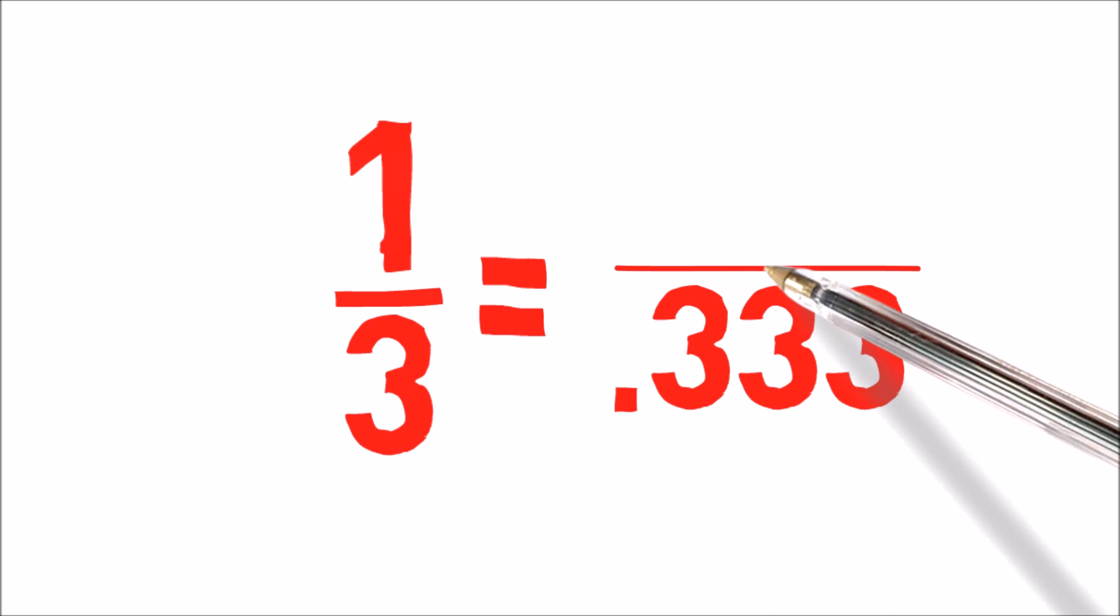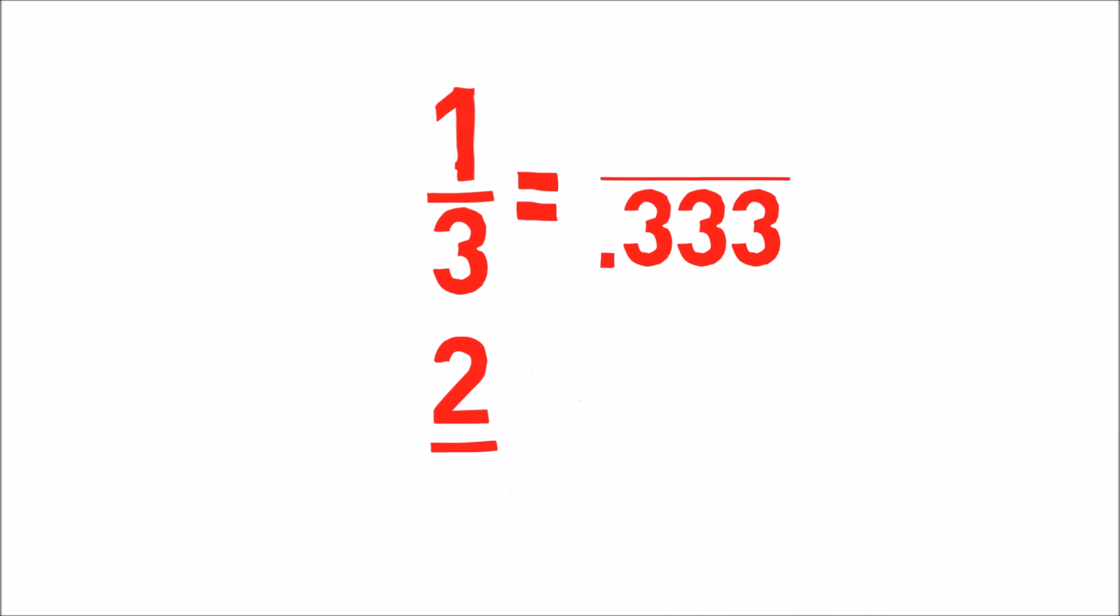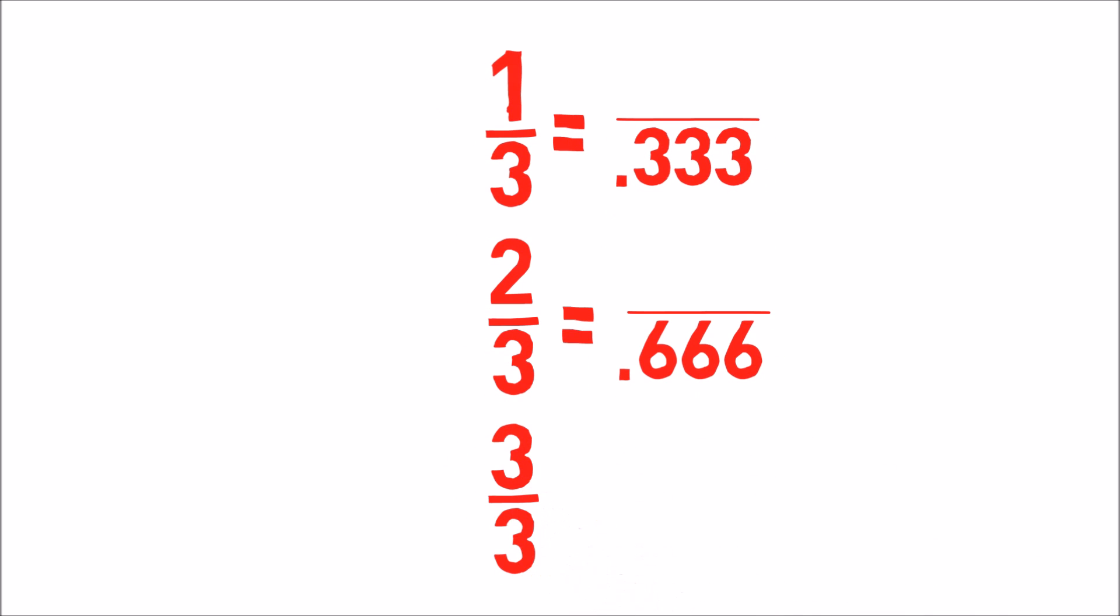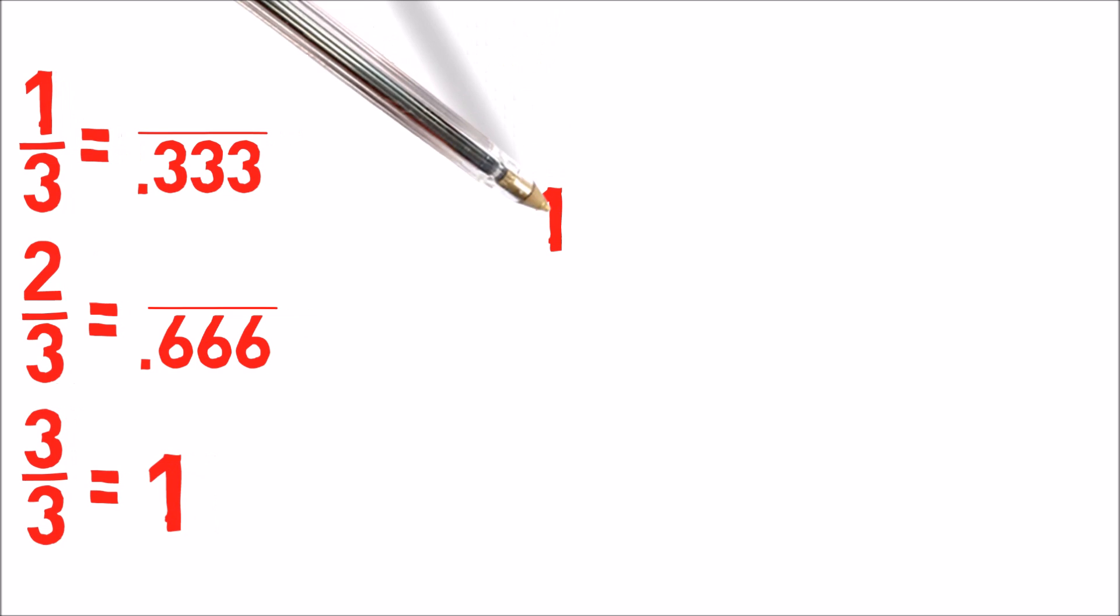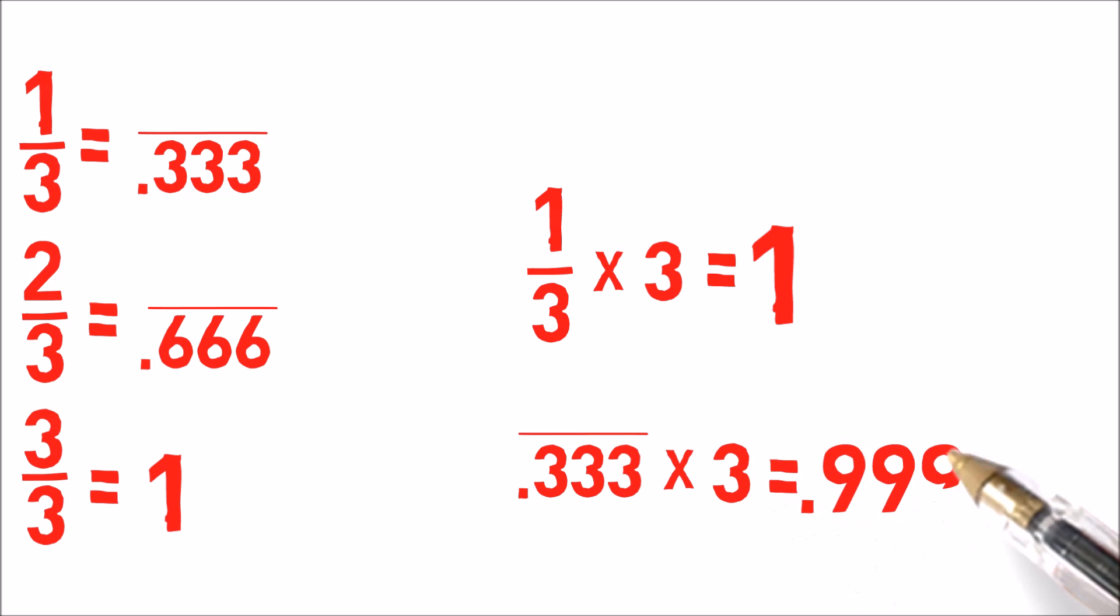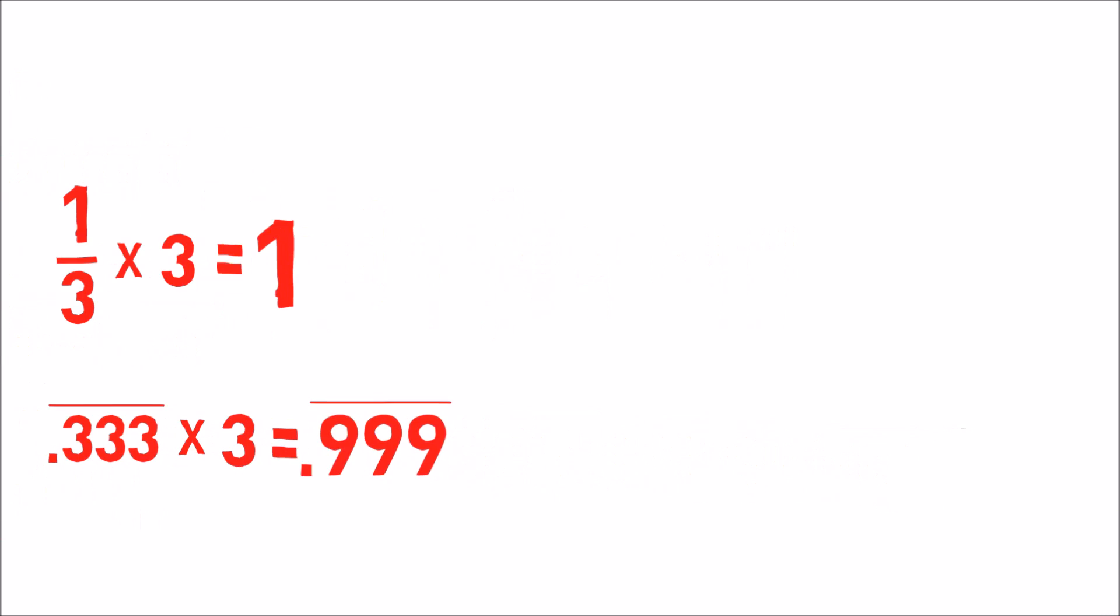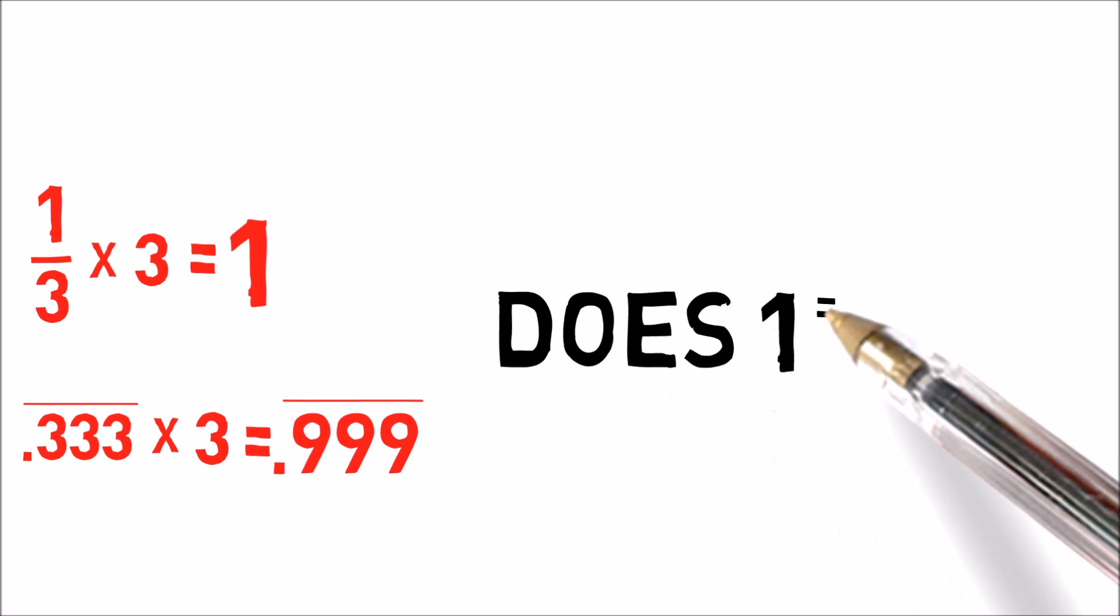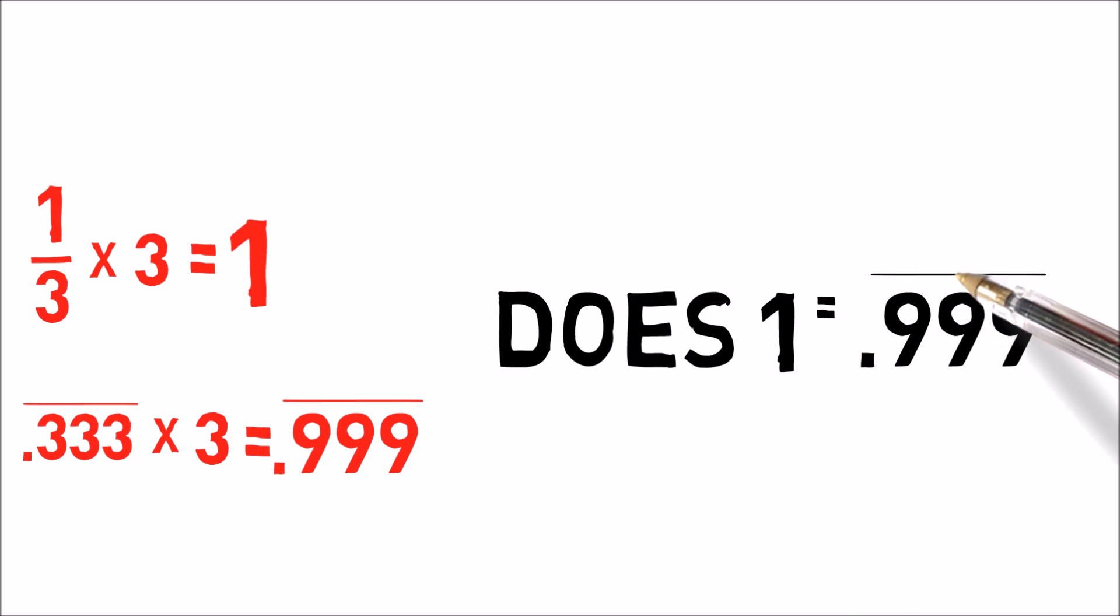Let's take a look at the math. 1 over 3 equals 0.333 repeating forever. 2 over 3 equals 0.666 repeating forever. And 3 over 3 equals 1. 1 over 3 times 3 obviously equals 1. But 0.333 repeating forever times 3 equals 0.999 repeating forever. The answers to the same question are different. 1 third versus 0.333, they are the same, but they come out with a different answer. So, are they equal?